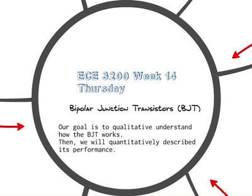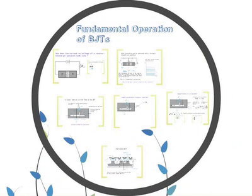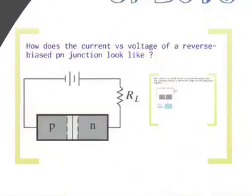In N-channel MOSFETs, only electrons carry current; in P-channel, only holes. In bipolar junction transistors, both operate together — making them a bit more difficult to understand. Historically, BJTs were the first transistors invented. Bardeen and coworkers won the Nobel Prize for inventing this device. BJTs are less common today overall, but still important — primarily for discrete devices, not integrated. They tend to be much faster than MOSFETs, so they're used in very specialized high-frequency circuits, and sometimes combined with MOSFETs in what's called BiCMOS — Bipolar Complementary MOSFETs.